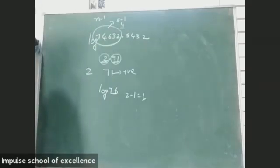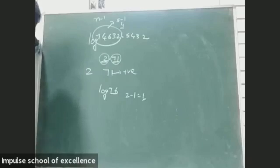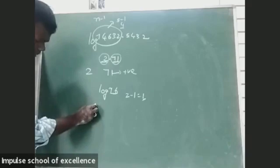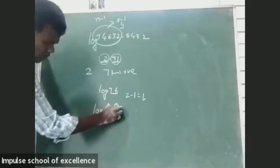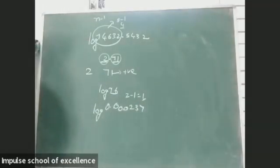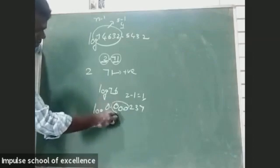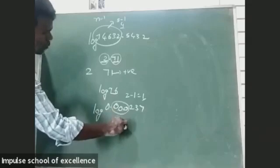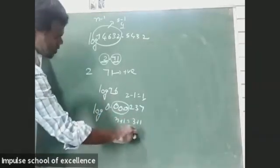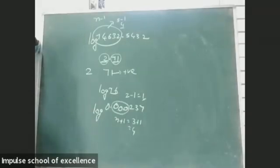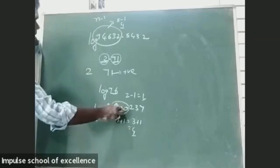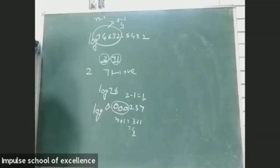Rule 2: if we have a decimal fraction, with n zeros after the decimal point before a non-zero digit, the characteristic is written as n plus 1 bar (negative). For example, log 0.000237 — count the zeros after the decimal to determine the characteristic. This covers the concept of logarithms up to class 10th and for IIT classes.